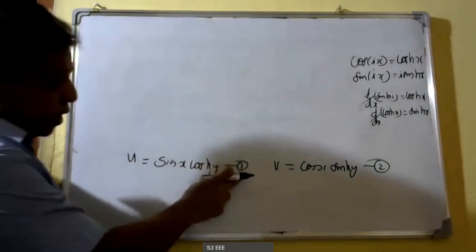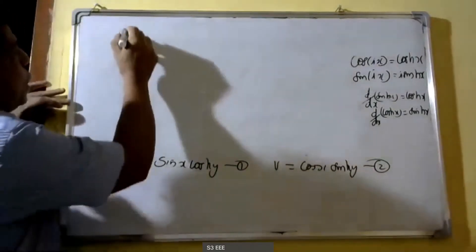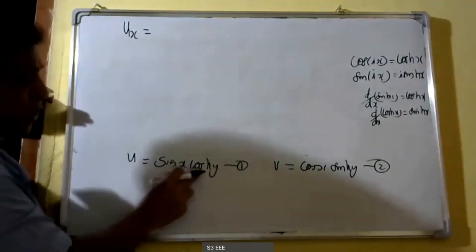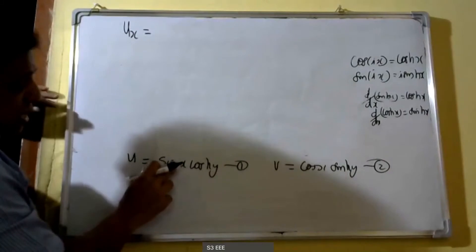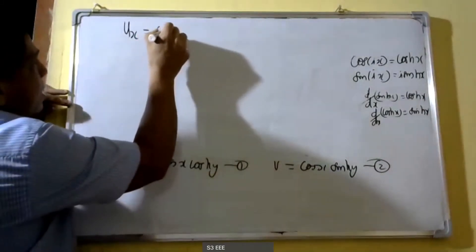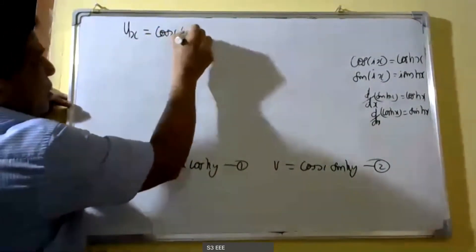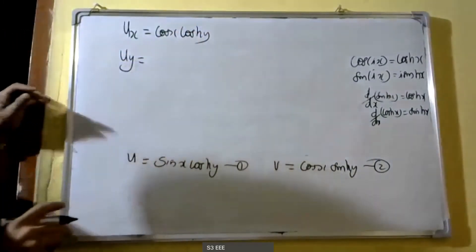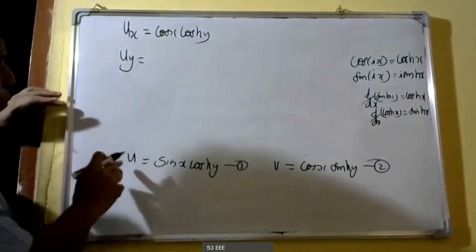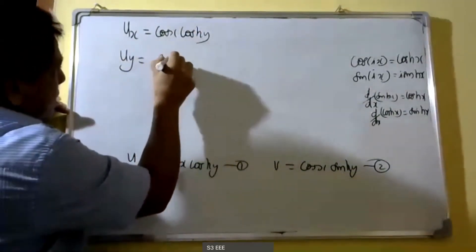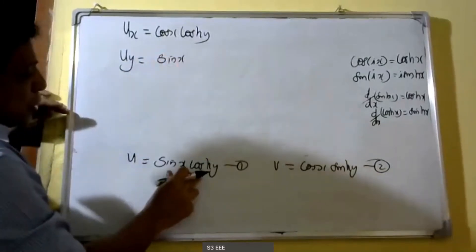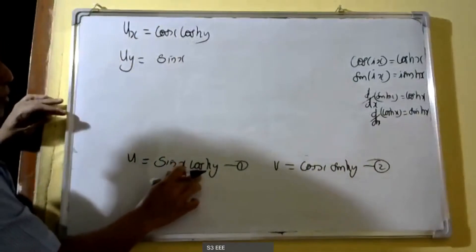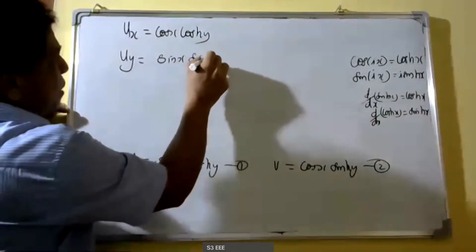When we differentiate equation 1 with respect to x, we get u_x = cos(x)·cosh(y), since cosh(y) is a constant with respect to x. When we differentiate with respect to y, u_y = sin(x)·sinh(y), since the derivative of cosh(y) with respect to y is sinh(y).